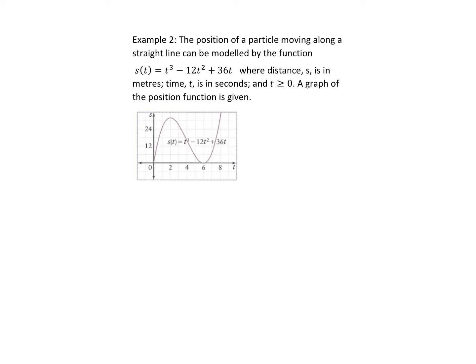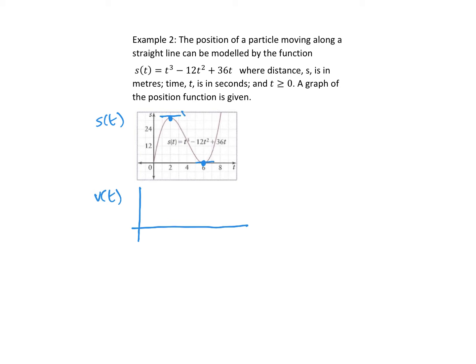Here we have a particle moving in a straight line, going forward and backwards. The displacement is given as s(t) = t³ − 12t² + 36t. We want to sketch a graph, so I'm going to line this up — this is displacement and then this is velocity. Where the graph turns, where the tangent is a horizontal line, is where velocity is zero. I'm going to put my values in here. At t = 2 and t = 6, the velocity is zero, so I can put those on the graph.